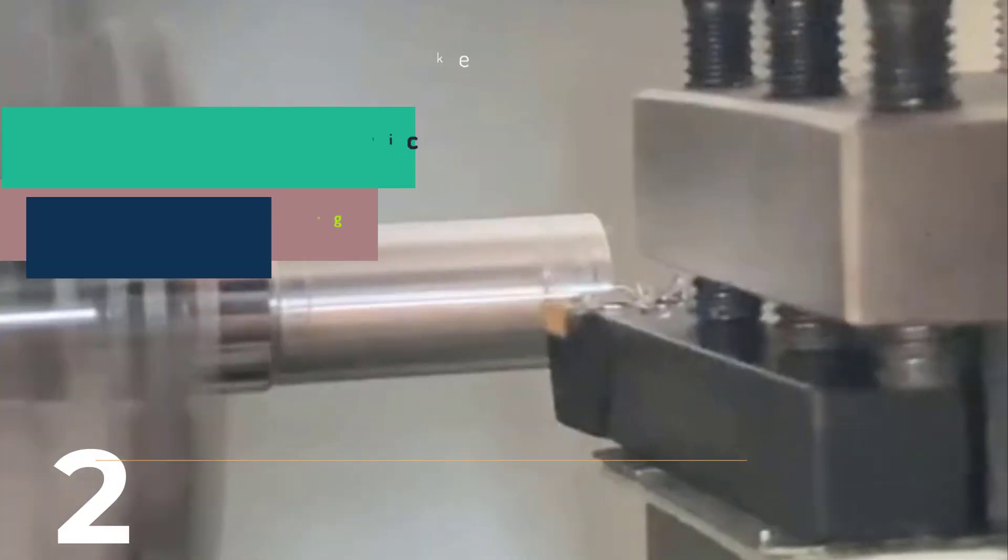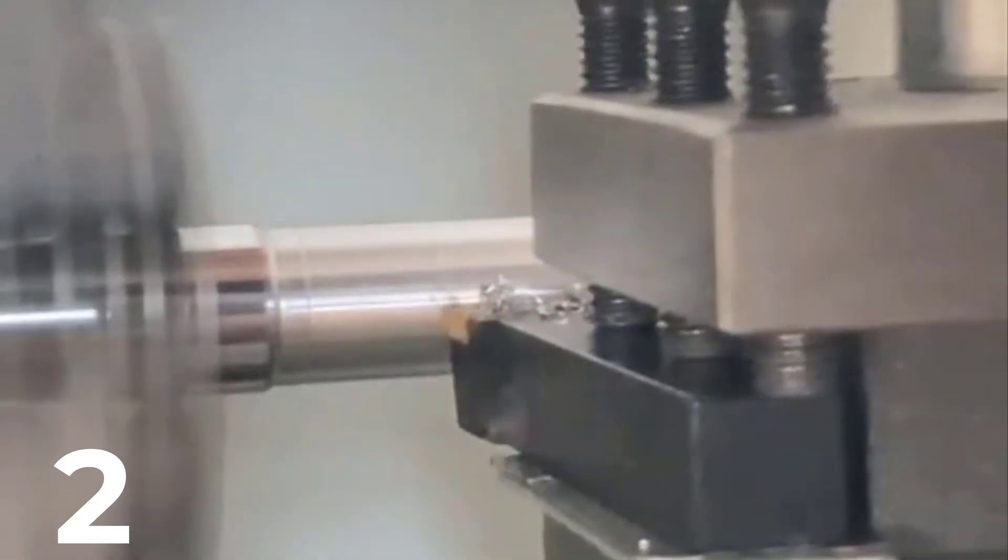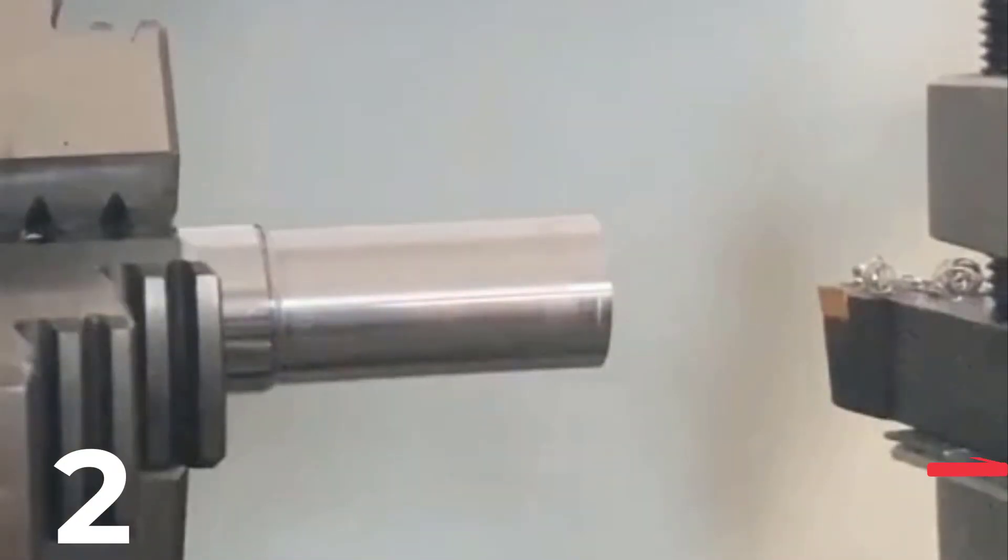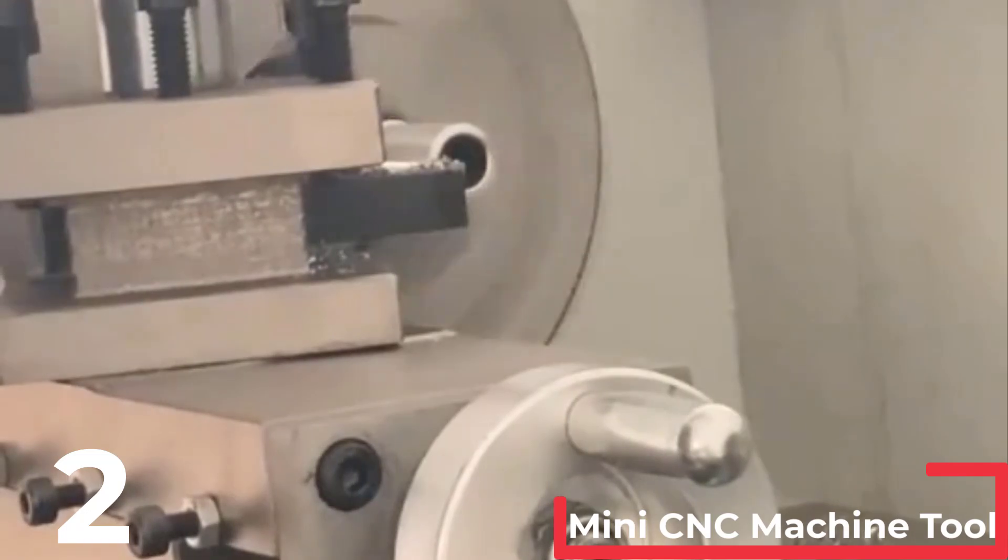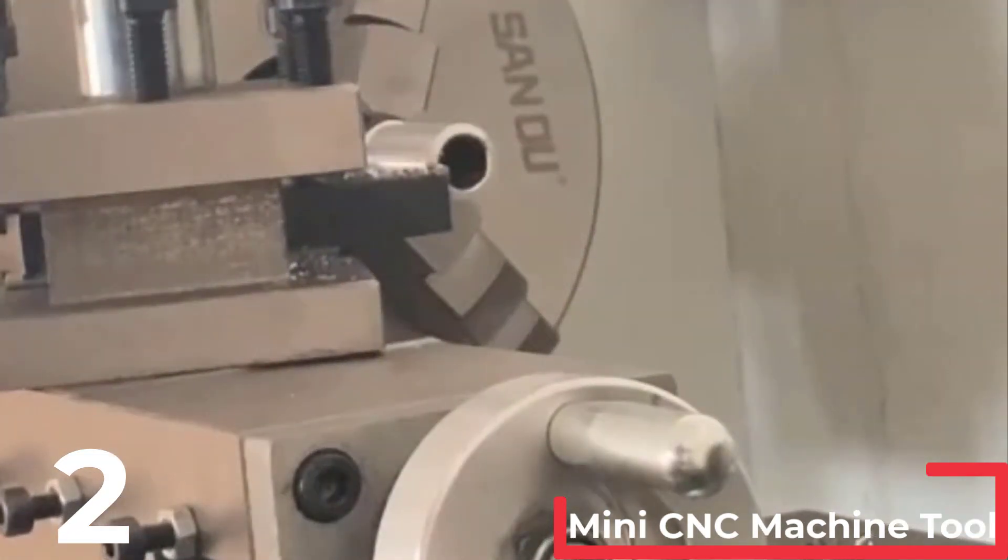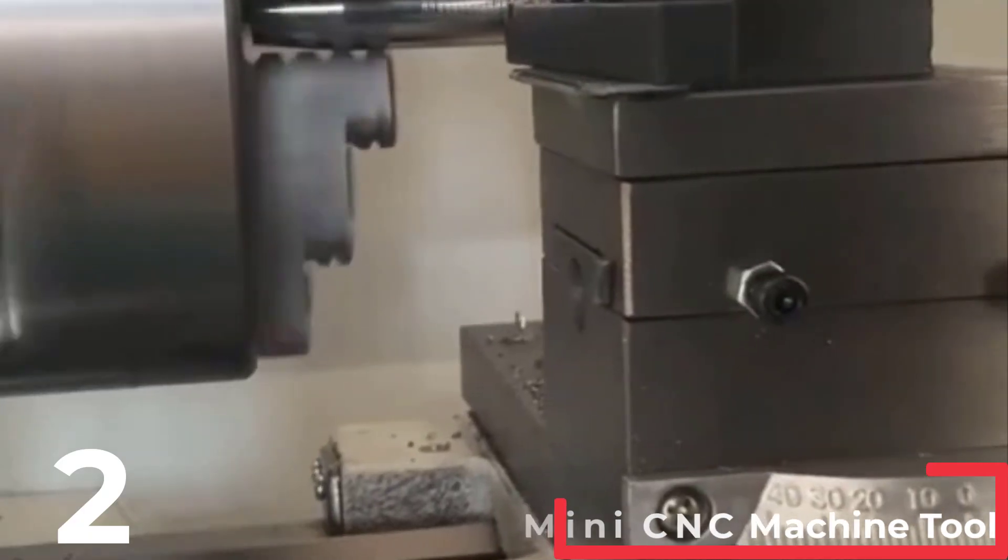Weighing 70 kilograms, the lathe ensures stability and durability. Originating from mainland China, it is branded under LIBGAC NC and comes with an EU plug for easy integration into your workshop setup. Ideal for both hobbyists and professionals, the WM210V CNC lathe is a reliable choice for detailed metalwork.